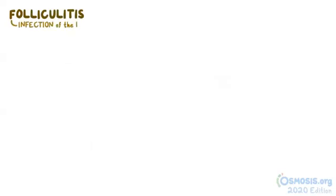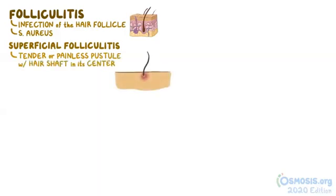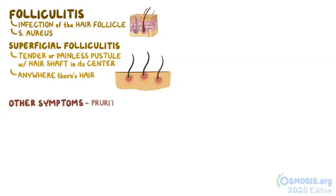Second is folliculitis, which is an infection of the hair follicle, and it's most often caused by S. aureus. Superficial folliculitis presents as a tender or painless pustule with the hair shaft in its center. Usually multiple lesions develop anywhere there's hair, like the scalp, armpit, or groin area. Other symptoms include pruritus or tenderness, and the pustules tend to heal without any scarring or follicle loss.